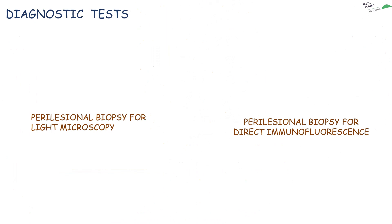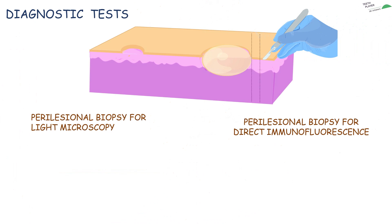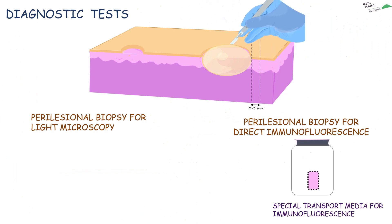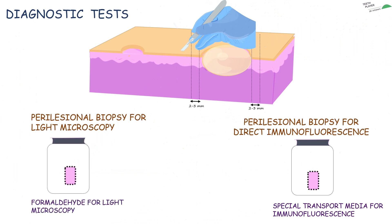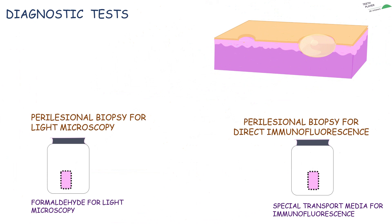Let's see with the help of a model how this is done. As the model clearly shows, there is a vesicle and an erosion. If a biopsy is intended, at least two to three millimeters of space is kept between the lesion and the biopsy site. The sample is taken and placed in a specific container. Similarly, on the other side, the same two to three millimeters of distance is kept between the lesion and the sample site, and the biopsy is taken and placed in a specific container.